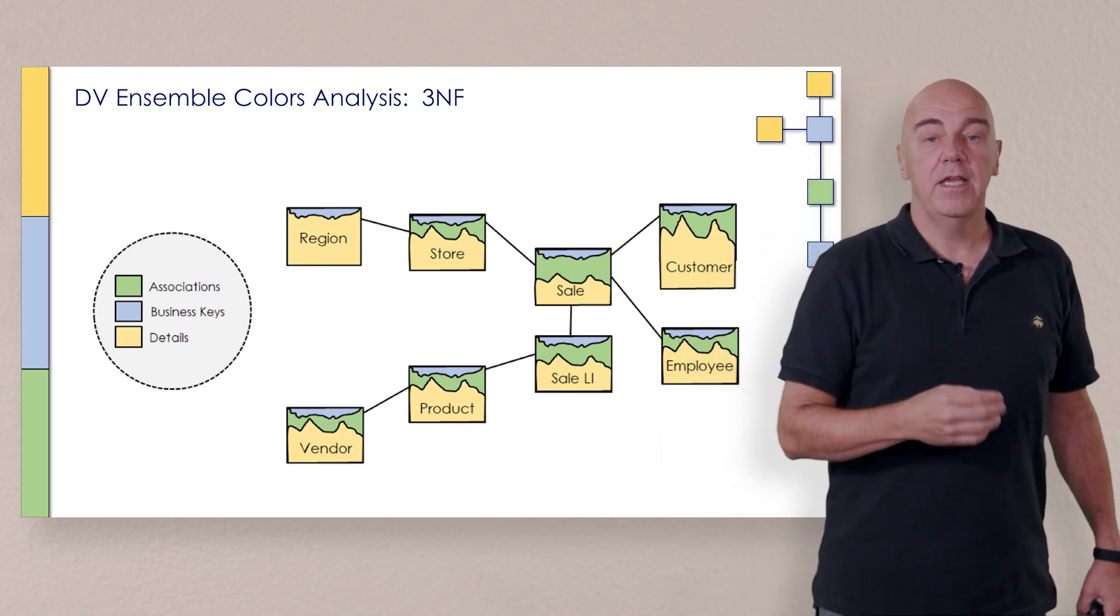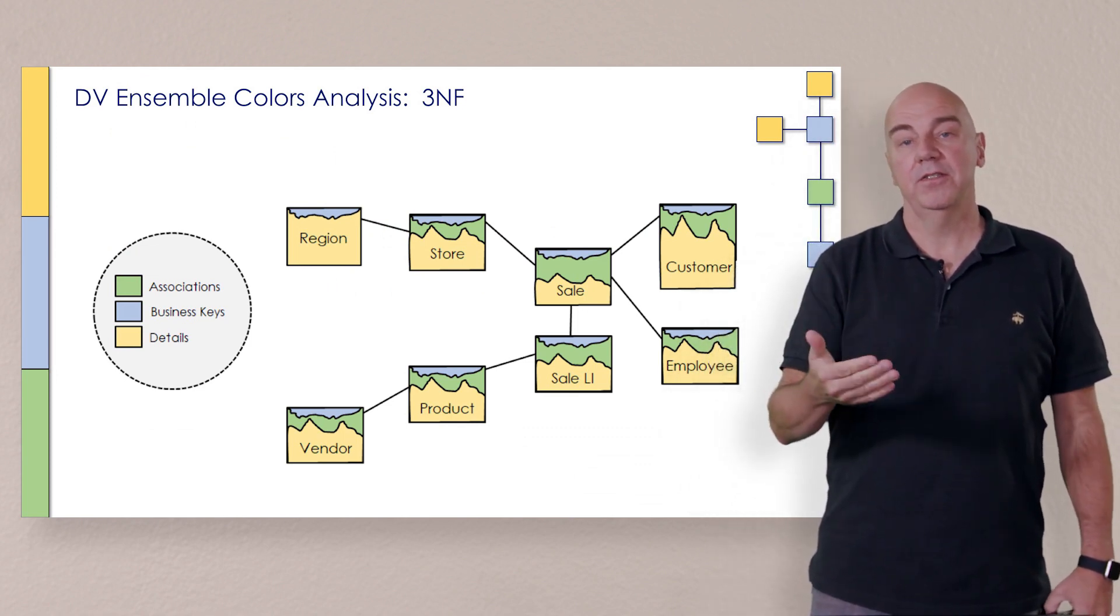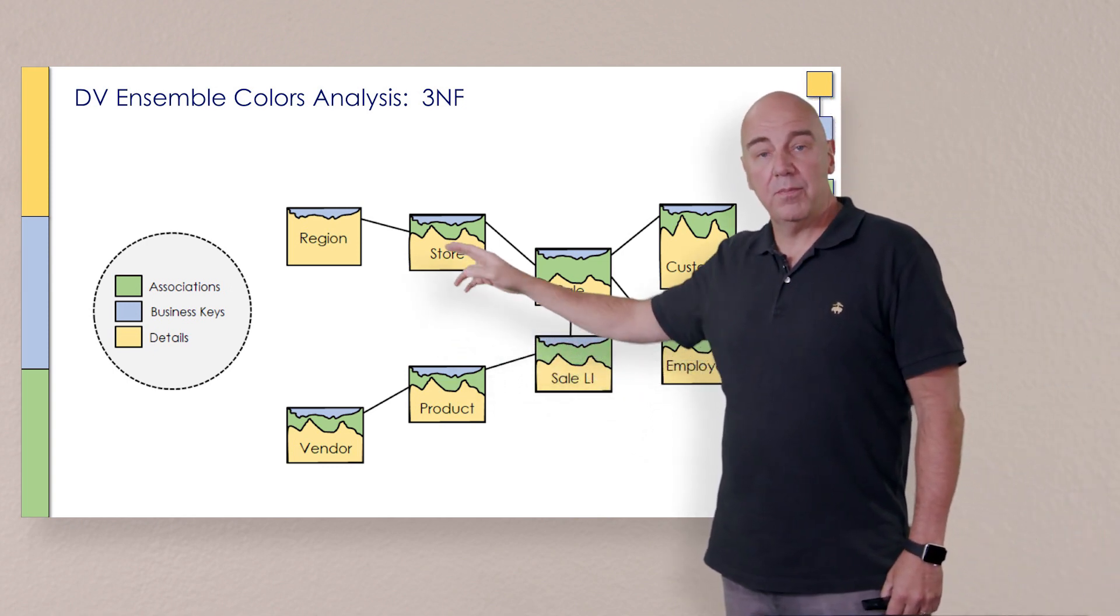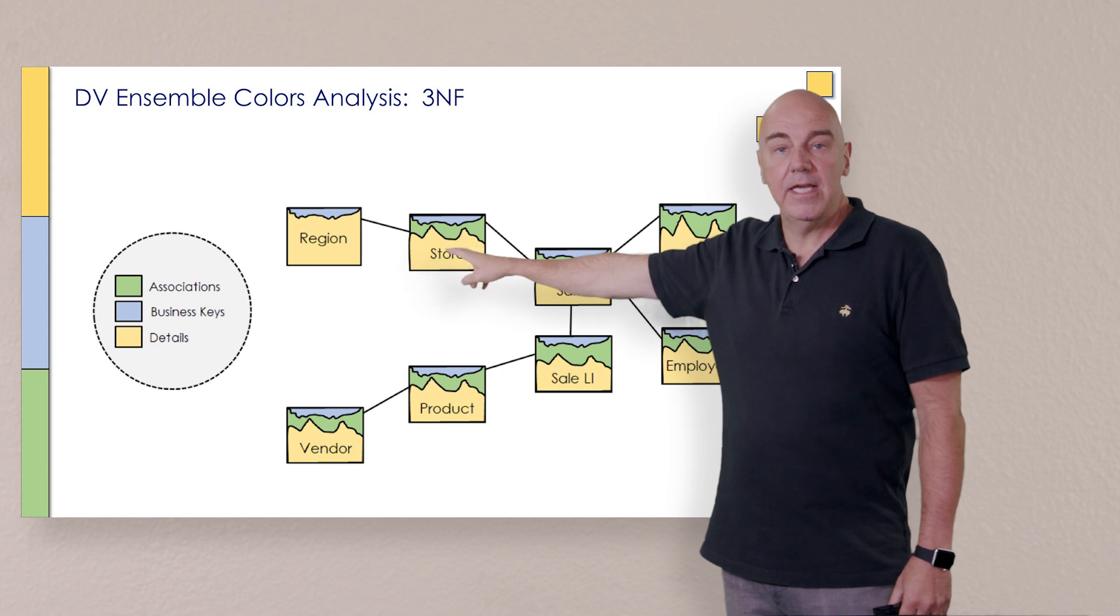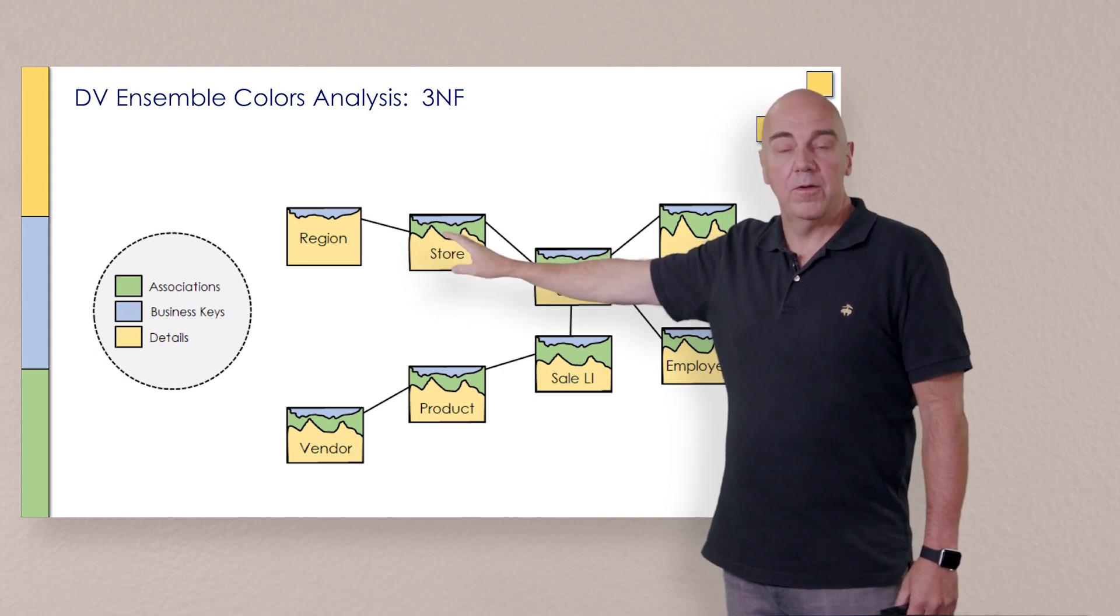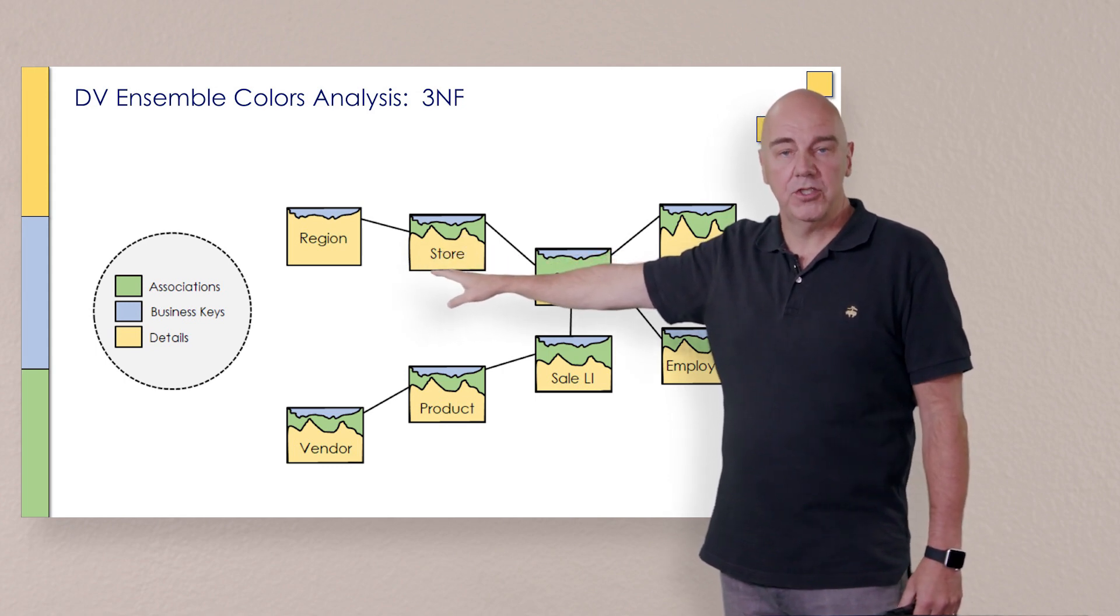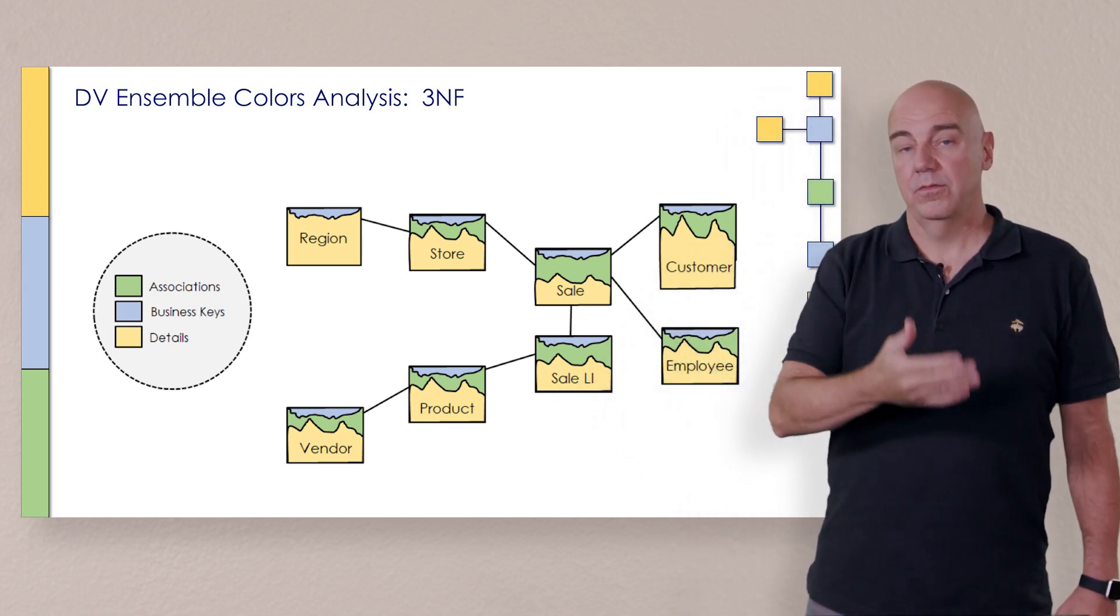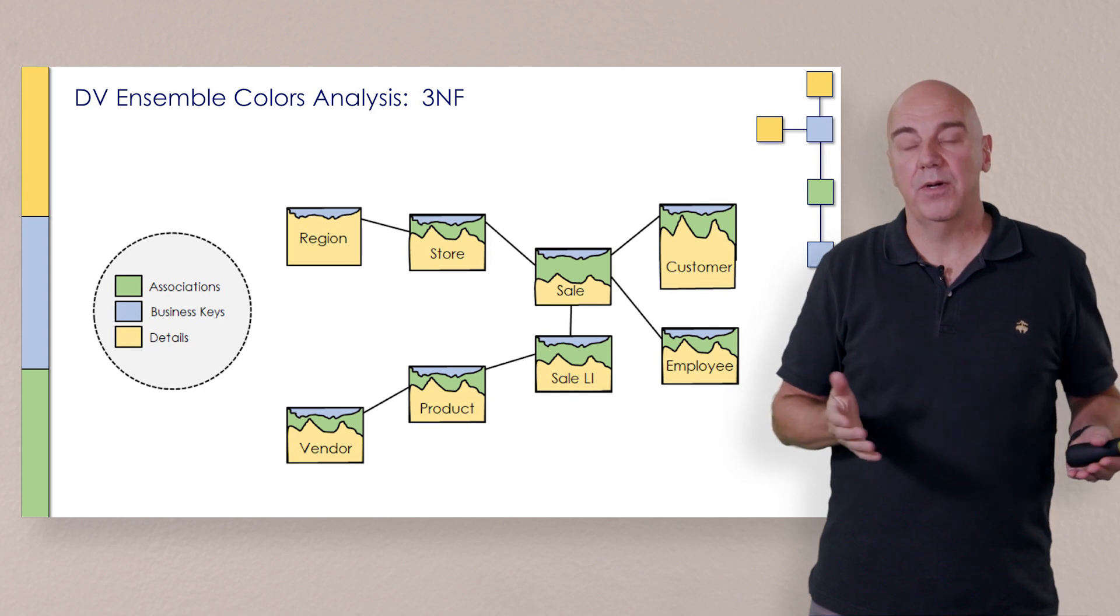The idea is that if we look at a table construct using the colors analysis by separating the things that are a key or an instance from the things that are associations or relationships from those things that are context or descriptive properties. That's actually what we're separating.